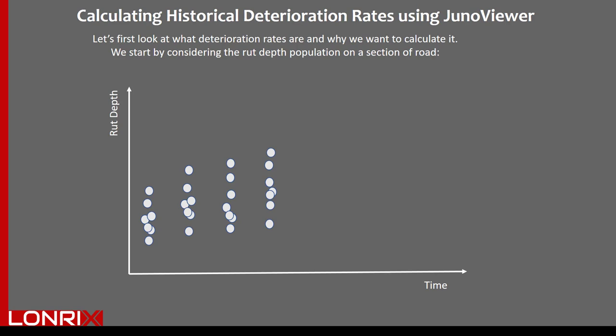When we run a deterioration model, we are interested in predicting condition into the future — in other words, future predicted performance. What we want to do is use the historically observed performance to inform our deterioration model about what is likely to happen in the future.